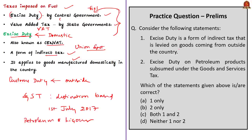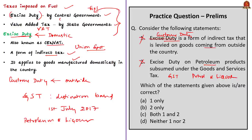Let's take up the given question. Two statements are given: (1) Excise duty is a form of indirect tax levied on goods coming from outside the country — this statement is incorrect, because it is customs duty, not excise duty, that is levied on goods coming from outside the country; excise duty is imposed on domestically manufactured goods. (2) Excise duty on petroleum products is subsumed under Goods and Services Tax — this statement is also incorrect, as taxes on petroleum products and liquor are kept outside of GST. The correct answer is option D — neither 1 nor 2.